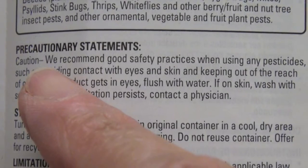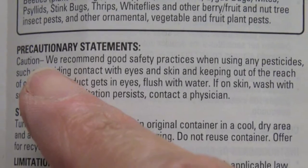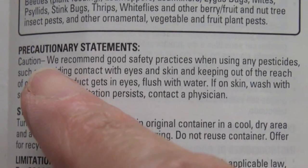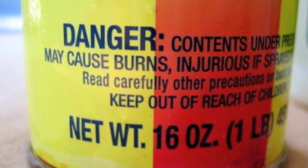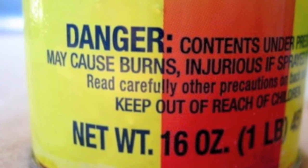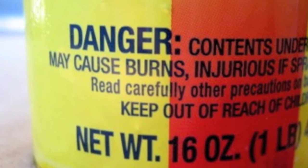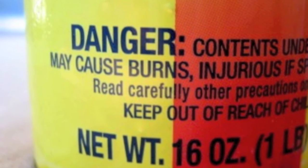Pesticides are required to show precautionary statements. These include Danger/Poison, showing a skull and crossbones, always in red. This means the ingredients are highly toxic to humans and potentially deadly in low dosage. Danger means that the ingredients are harmful to humans and can cause irreversible eye or skin injuries.